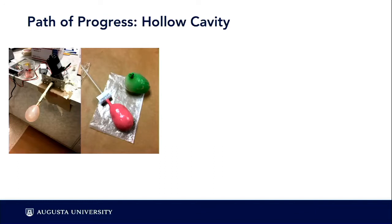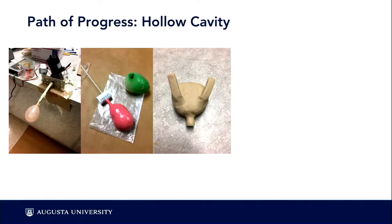Failure number two was to take silicone with a putty-like consistency — a two-part system you mix together to create a putty, add pigment, run it through a pasta roller, and get sheets of silicone you can lay upon other structures. We tried that with a balloon, but it didn't set up — there was something with the balloons that inhibited cure. So that didn't work.